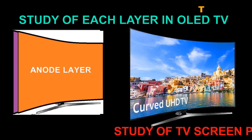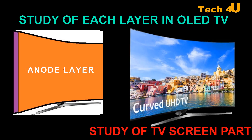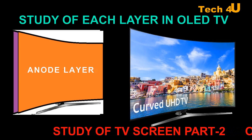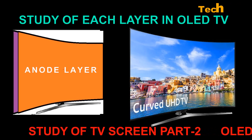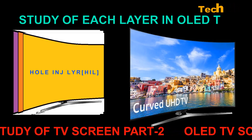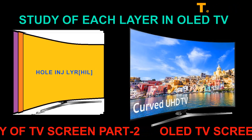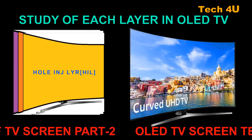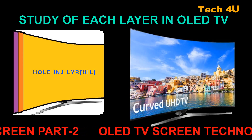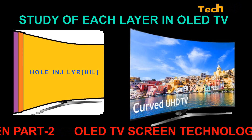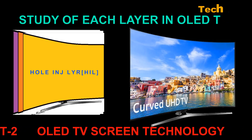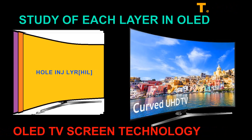The second layer is the anode, which is positively charged to inject holes into the organic layers that make up the OLED device. Next, the third one is the hole injection layer, or HIL. Deposited on top of the anode, this layer receives holes from the anode and injects them deeper into the device.